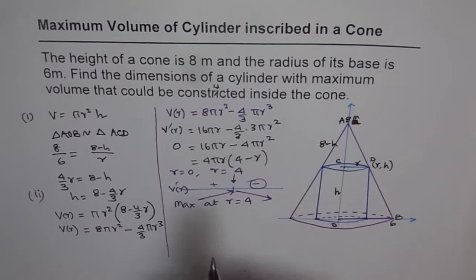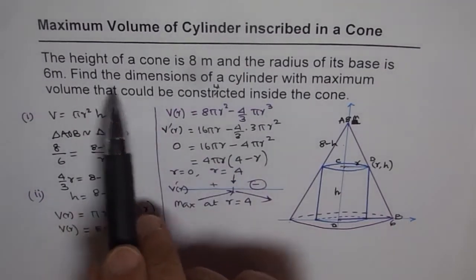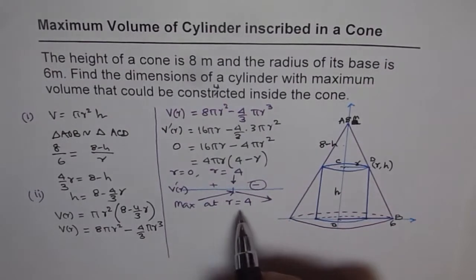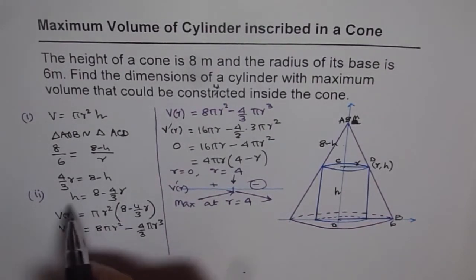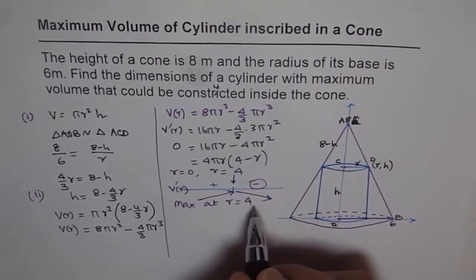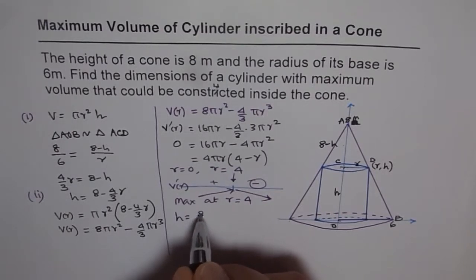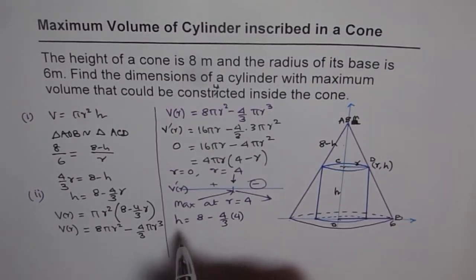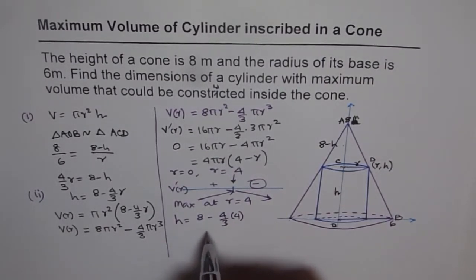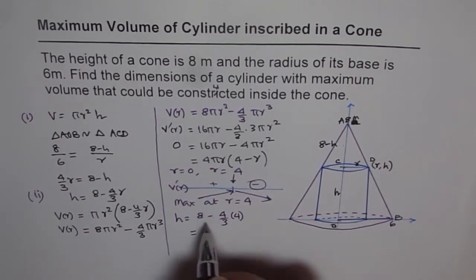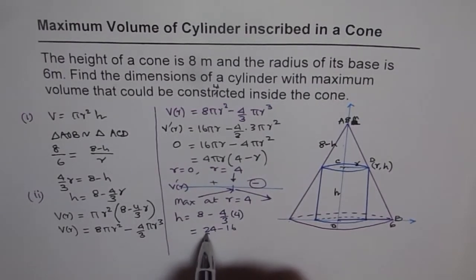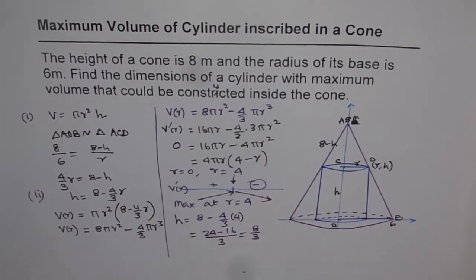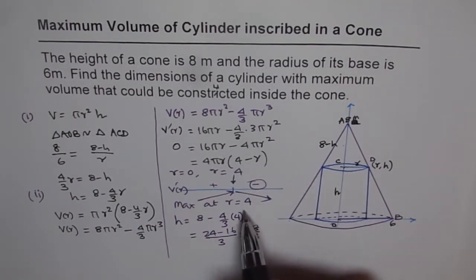So that is how we get the maximum volume, which can be enclosed in the cone. Now, to find the volume, what we can do is, it says actually find the dimensions of the cylinder with maximum volume that could be constructed in the cone. So we already got the radius. Now, when we have the radius, we can plug in the radius and find height. So we substitute this value, which is in equation 2. So we get height equals to 8 minus 4/3 times r, which is 4. So it is 16/3. So we will multiply this by 8 by 3. So we get 24 minus 16 over 3, that is the height. That gives us 8/3.